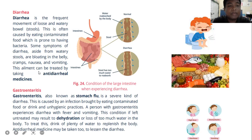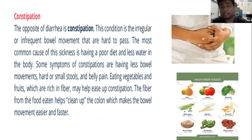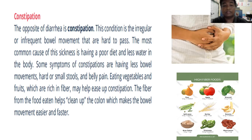The opposite of diarrhea is constipation. Constipation is the irregular or infrequent bowel movement that is hard to pass. The most common cause of this sickness is having a poor diet and less water in the body. Some symptoms are having less bowel movements, hard or small stools, and belly pain.